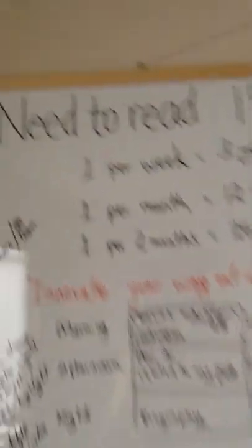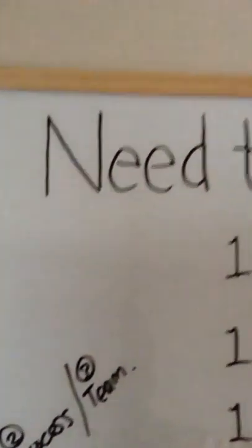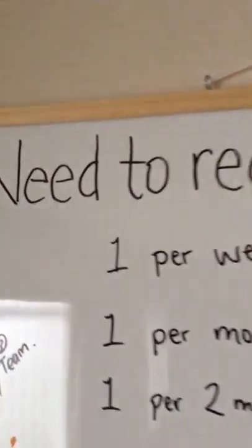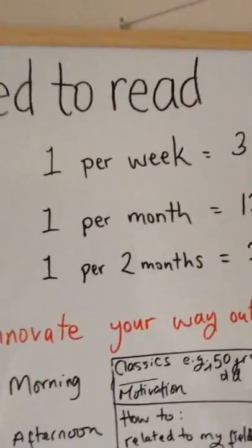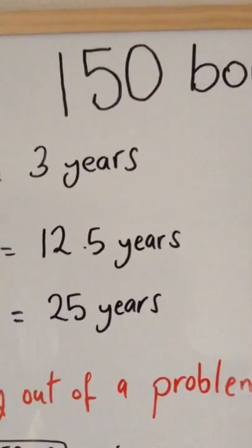So here we go. I want to walk you through. Like he says, read 150 books. Now the structure here is if you read one per week, you should be able to complete this in three years.